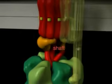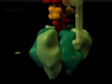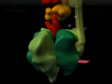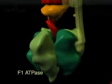The rotational energy is transmitted via a shaft attached to the rotor that penetrates deep into the center of the characteristic lollipop head, the F1 ATPase, which catalyzes the formation of ATP.